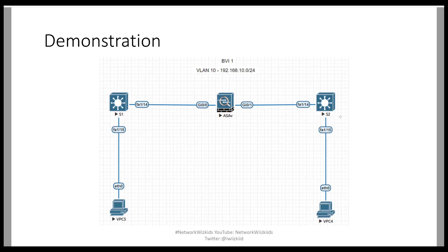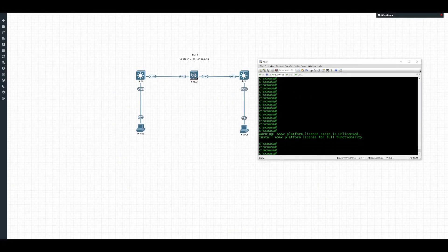Our demonstration today is to configure one ASA-V in transparent mode. We have a switch on either side — left and right — and two VPCs on either side as well. The goal is to configure transparent mode and verify connectivity between the two VPCs. We are using VLAN 10 throughout the environment and will configure one bridge group, BVI 1.